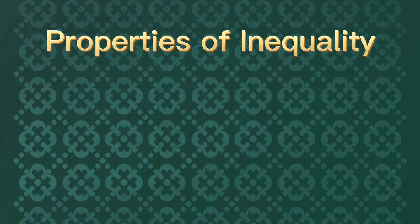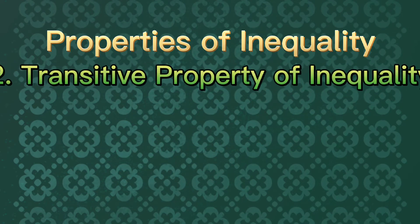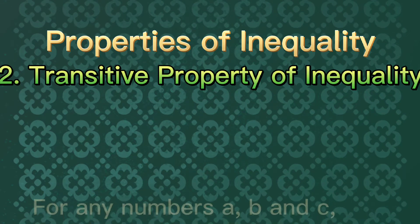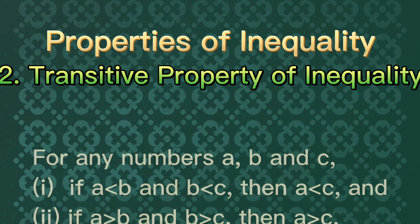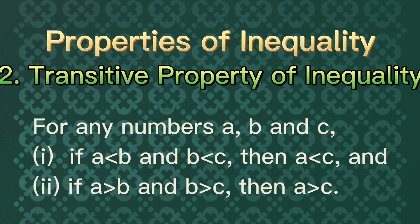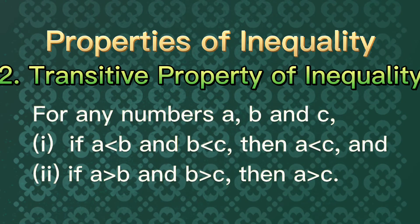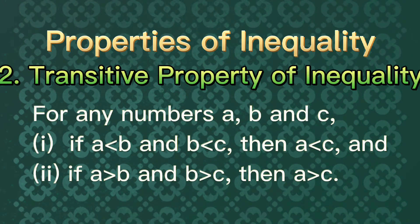The second property is called transitive property of inequality. For any numbers A, B, and C, if A is less than B and B is less than C, then A is less than C. And if A is greater than B and B is greater than C, then A is greater than C.